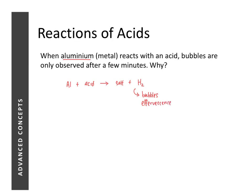However, why we only see bubbles after a few minutes is because aluminium has a very high tendency to react with oxygen in the air and form a layer of aluminium oxide on its surface. So when you throw this piece of aluminium into an acid, the immediate reaction that occurs is not between aluminium and the acid, but rather between aluminium oxide and the acid.